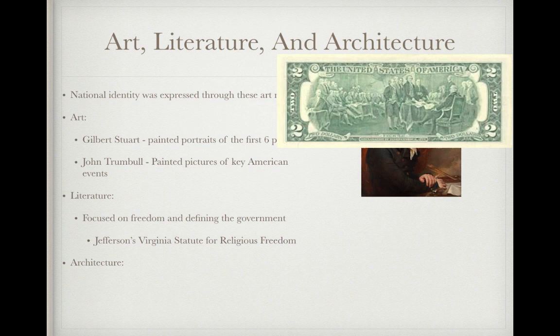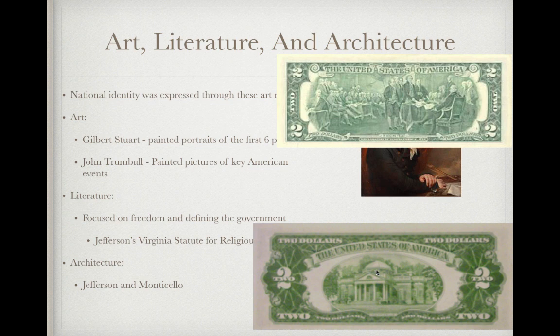Under architecture, Jefferson's Monticello — his house — has this dome on top, and that's very influential during this time. Think about the Capitol building as well and the dome on top. Pierre Charles L'Enfant was the guy who laid out Washington, D.C. and helped establish this city as the nation's capital.